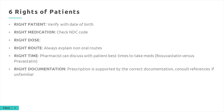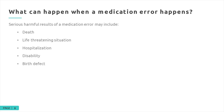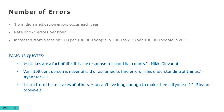What can happen when a medication error occurs? Serious harmful results can range all the way up to death, life-threatening situations, or a patient ending up hospitalized. Disability or even a birth defect can result if a teratogenic medication is given to a woman. The numbers are significant: 1.5 million medication errors occur each year at a rate of 171 errors per hour, increased from 1.09 per 100,000 people in 2000 to 2.28 per 100,000 people in 2012. What do you think is responsible for that near-doubling of the rate?